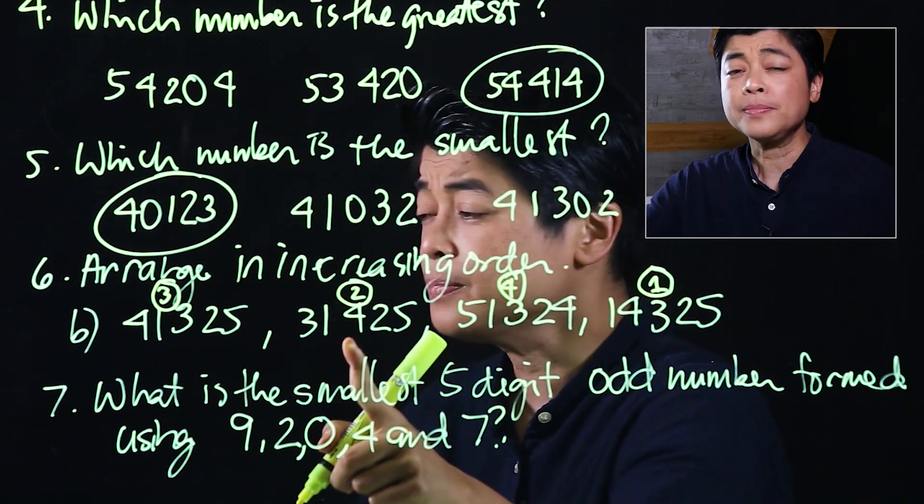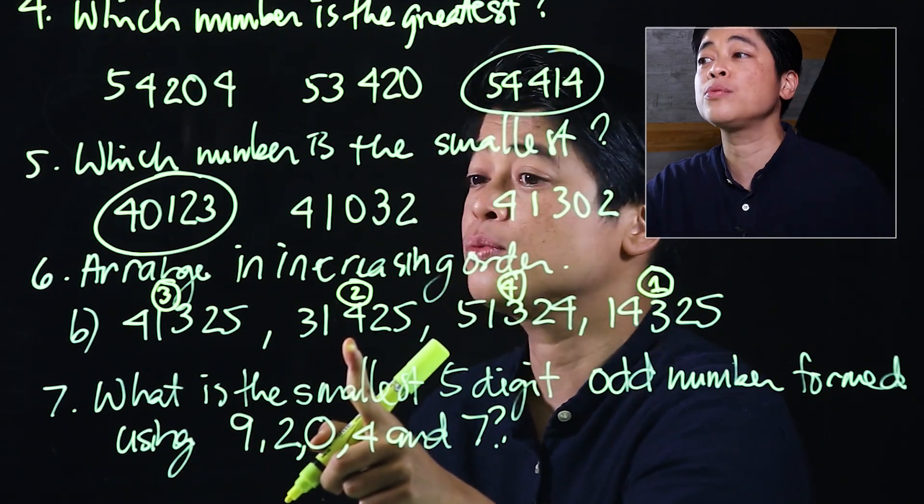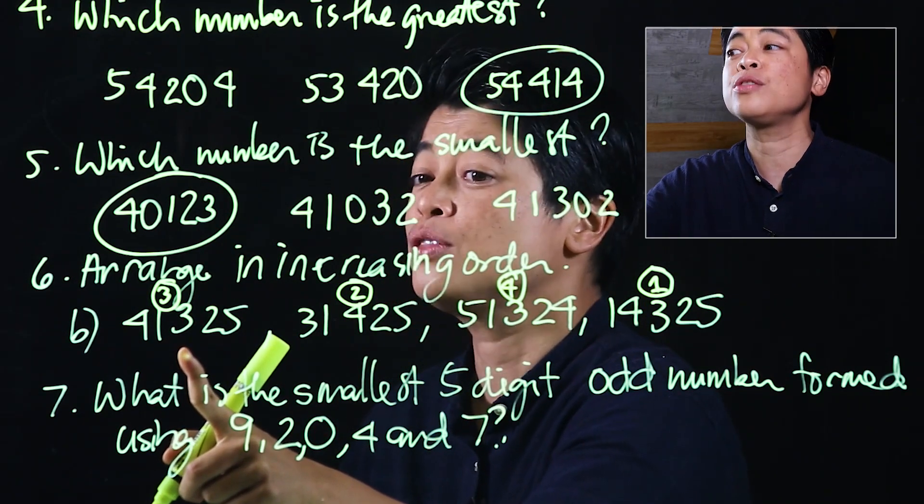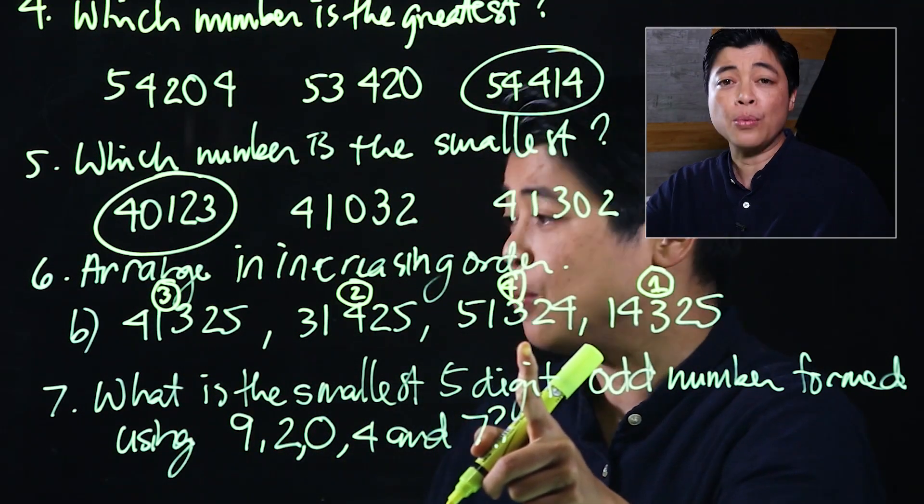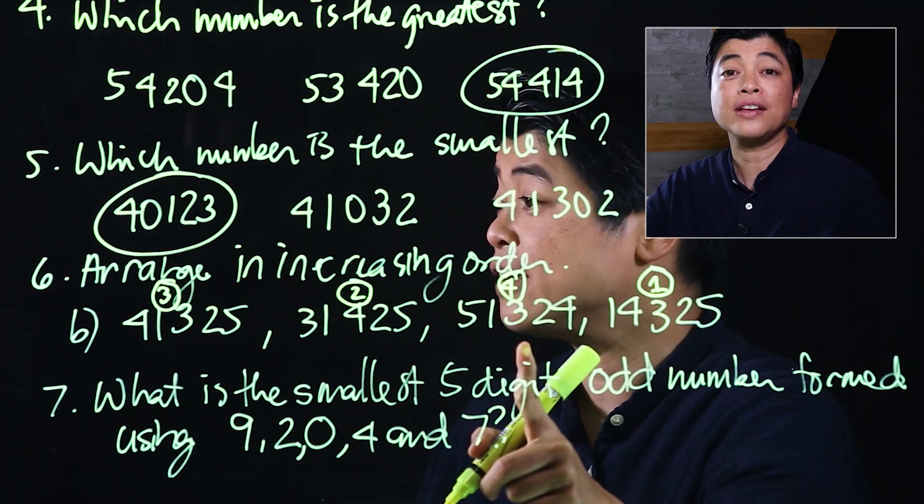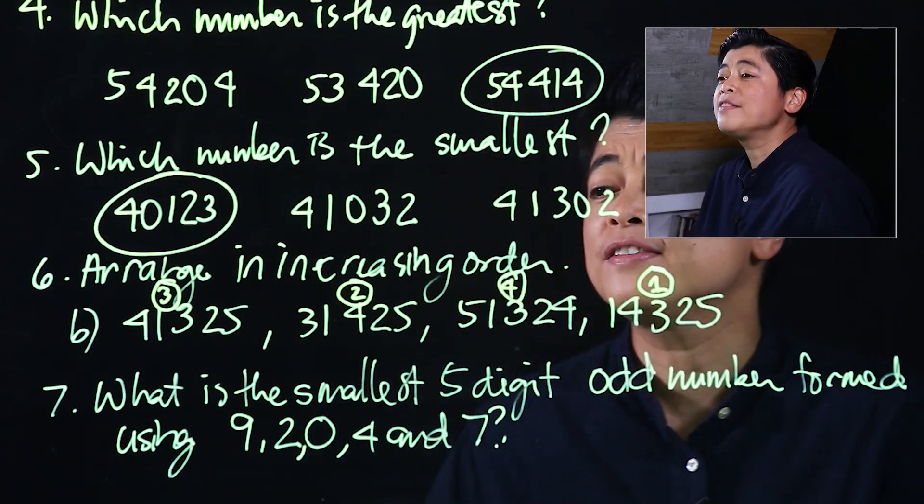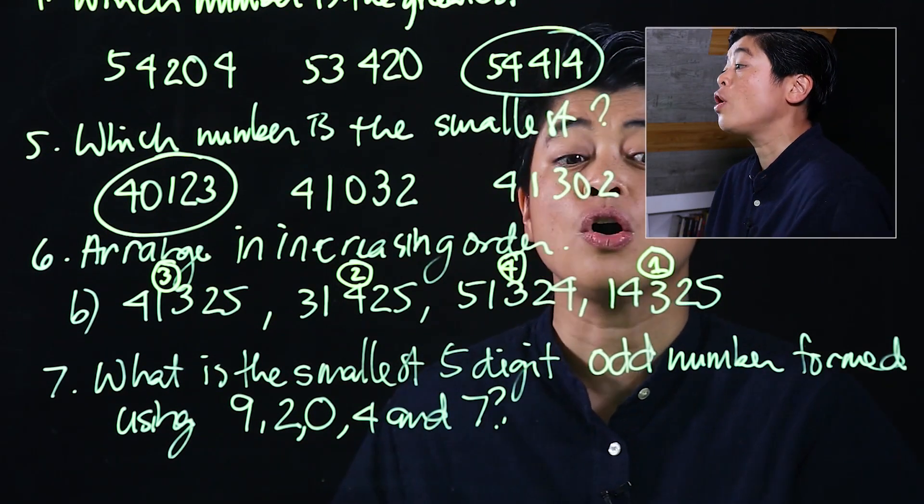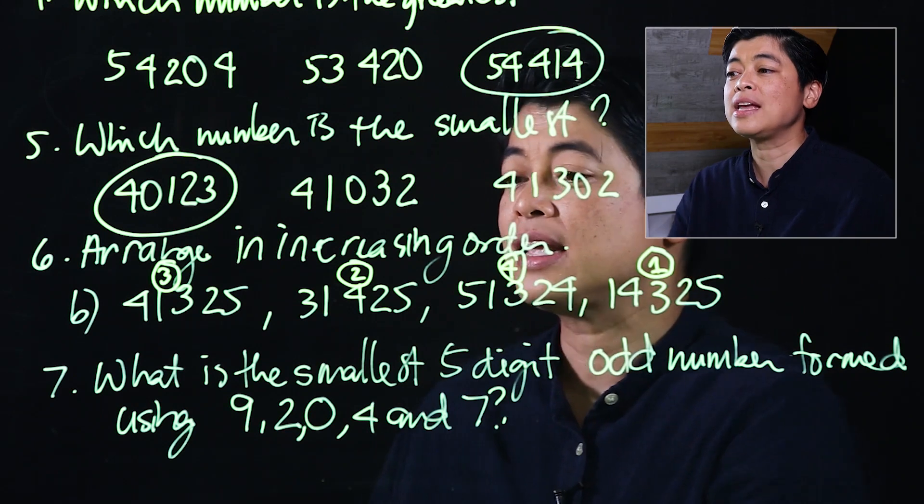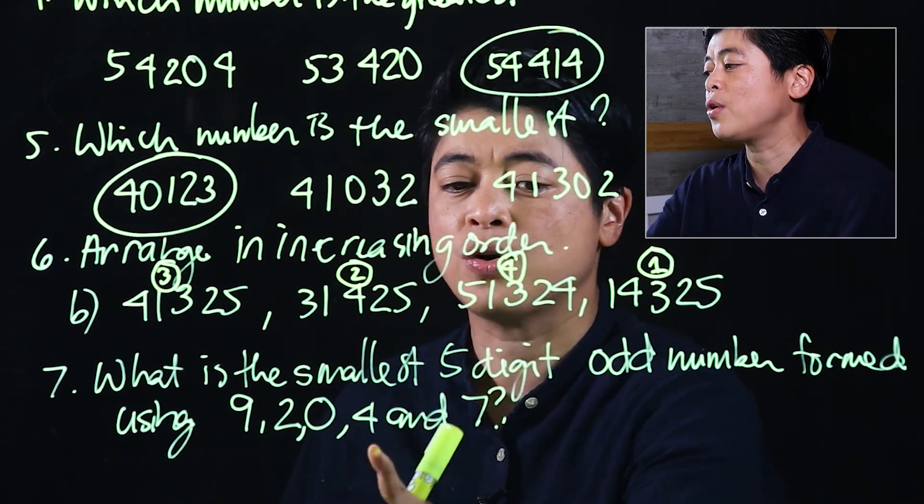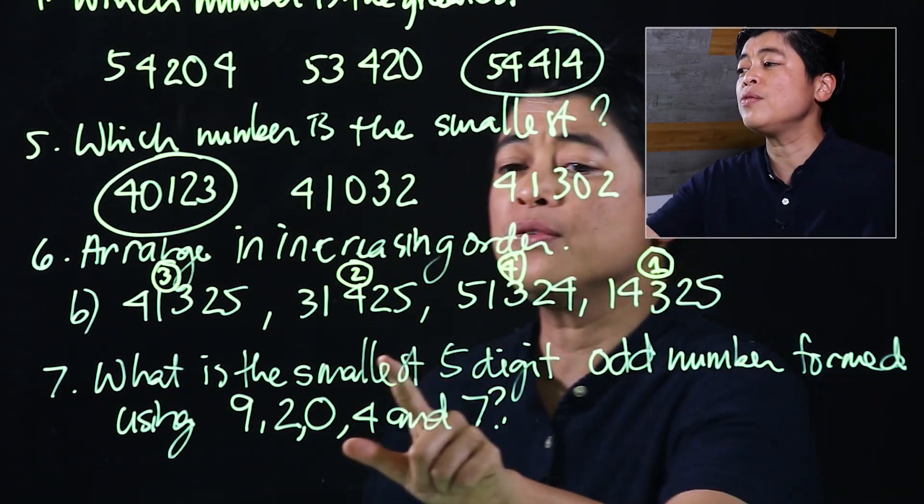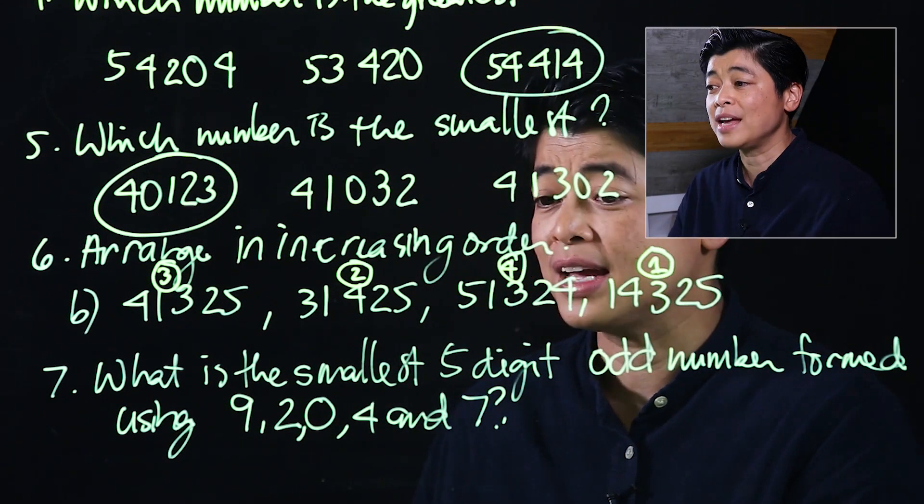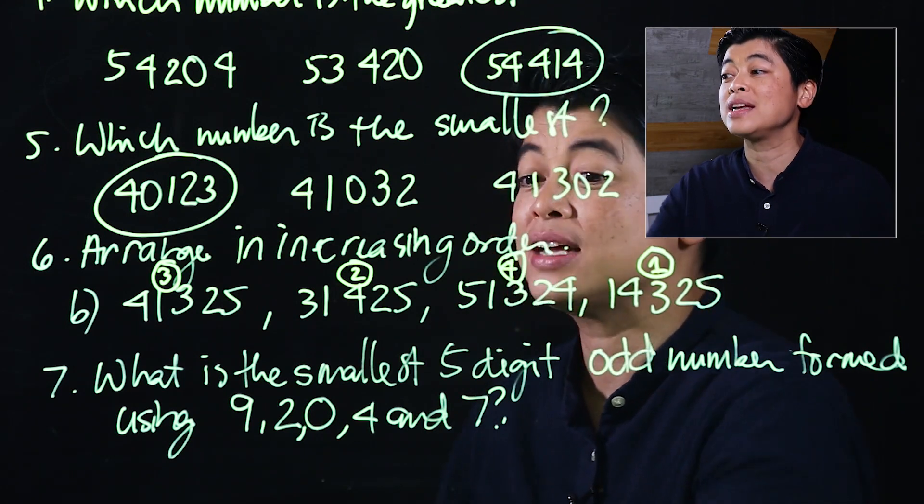Finally, the question says 'what is the smallest five-digit odd number that can be formed using 9, 2, 0, 4, and 7?' If it wants the smallest, we always start with the smallest number. However, in this case we cannot start with a 0.